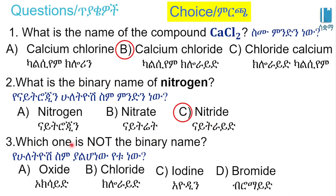Which one is NOT the binary name? Option A: oxide. Option B: chloride. Option C: iodine. Option D: bromide. The answer is C — iodine — because it has not been converted to the -ide form. It should be iodide.